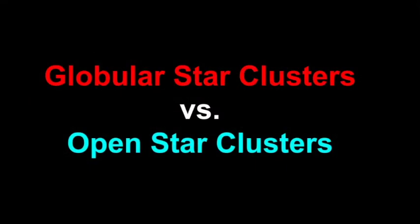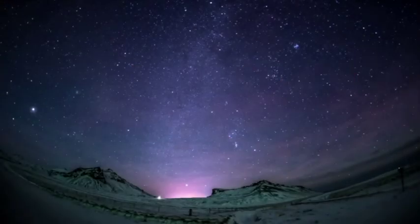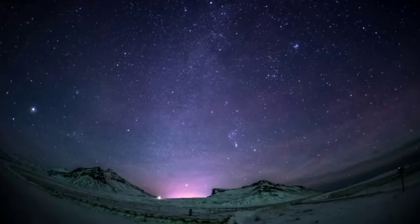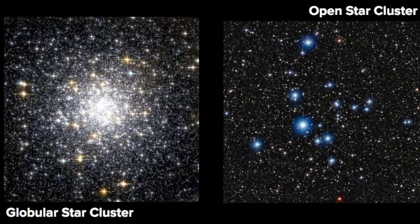Hi, welcome to Learn the Sky. My name is Janine, and in this video I'm going to walk you through the difference between globular star clusters and open star clusters. If you are outside on a clear and very dark night, you may start to notice that there are certain parts of the sky that can appear a bit fuzzy to the naked eye. It's very possible that what you are looking at is a star cluster, and it's best to examine these fuzzy patches of light with some magnification, whether it be binoculars or a telescope.